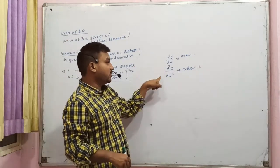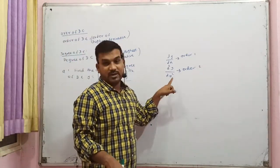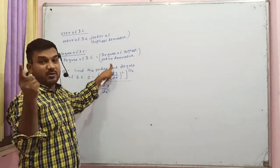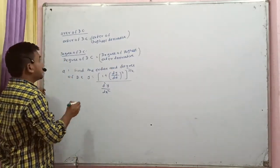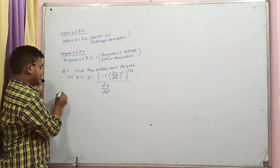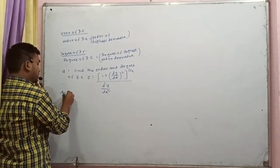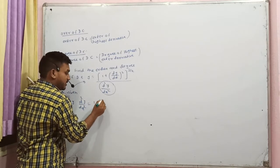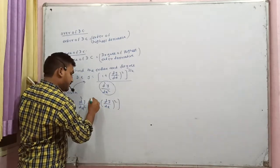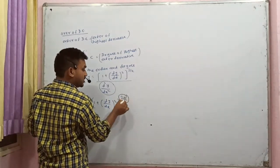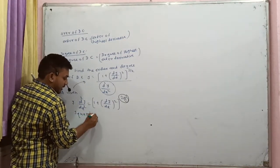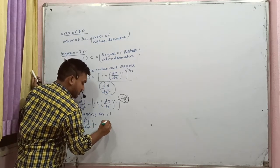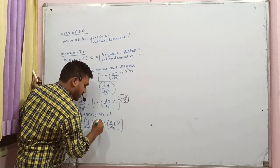The next example: the highest derivative involves d²y/dx². The given differential equation has y into d²y/dx², and on the right side we have 1 plus dy/dx whole square, raised to the power 3/2. We square both sides to eliminate the fractional power.